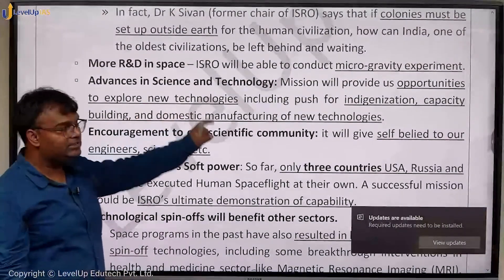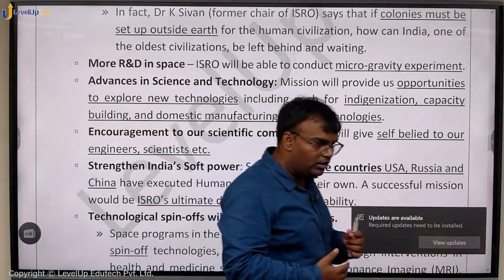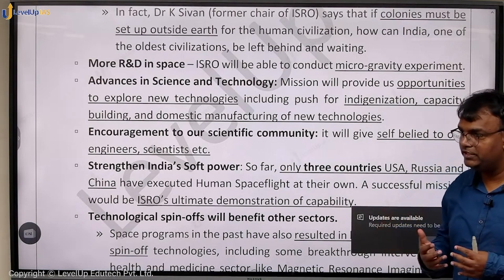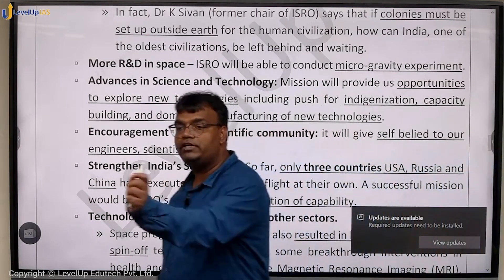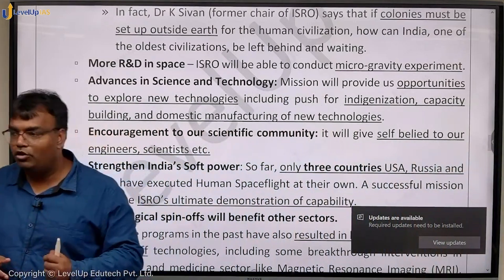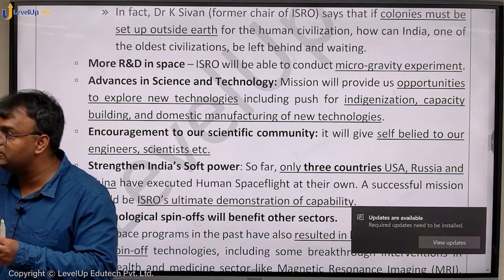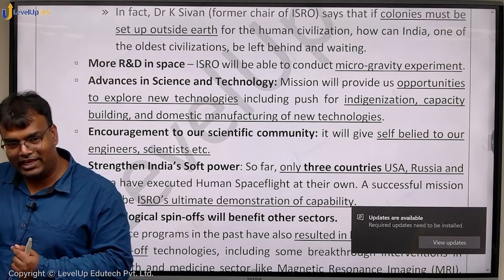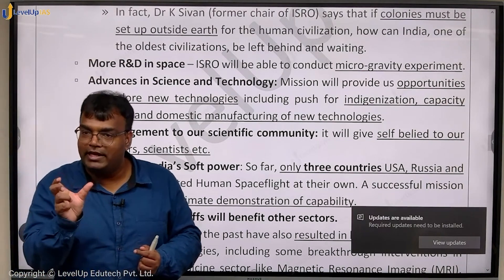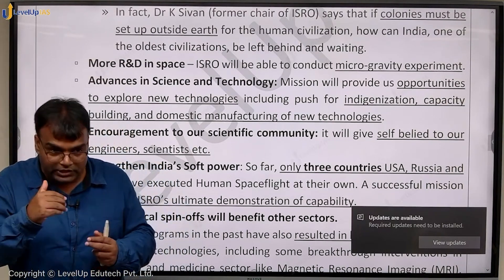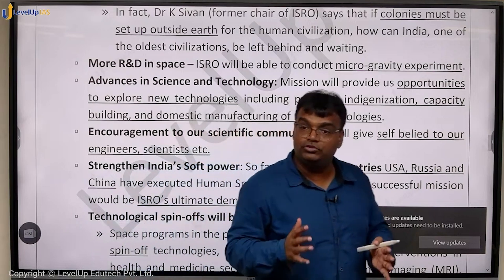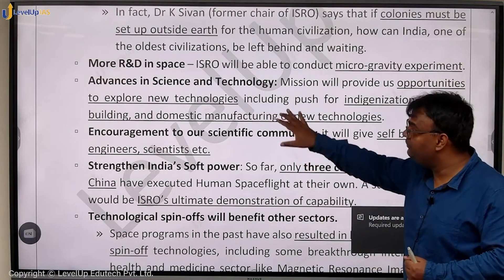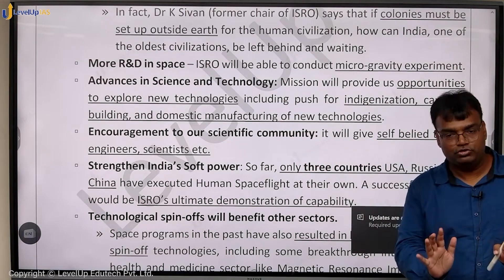Then there is more R&D in space. When scientists are in space, in zero gravity, they will be able to do microgravity experiments which they cannot perform on earth. There is also advancement in science and technology — when we develop a project like Gaganyaan, a lot of improvements have to happen in different areas. For example, our LVM 3 had to go through changes to become human-rated, and is now called HLVM 3.